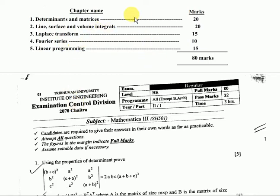The syllabus includes Chapter 1: Determinants and Matrices worth 20 marks, Chapter 2: Line, Surface and Volume Integrals worth 20 marks, Chapter 3: Laplace Transform worth 15 marks, Chapter 4: Fourier Series worth 10 marks, and Chapter 5: Linear Programming worth 15 marks, for a total of 80 marks.